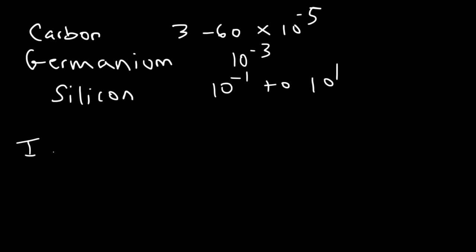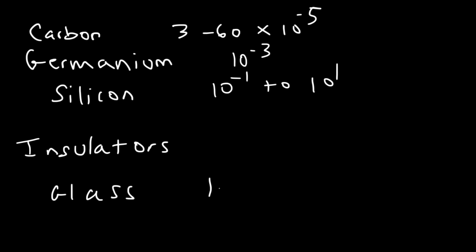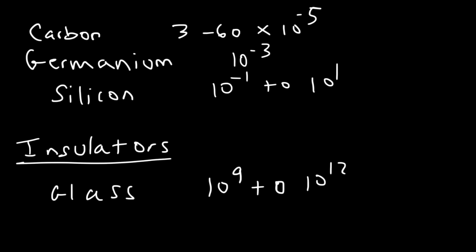Insulators, for the most part, do not conduct electricity. Glass has a resistivity that's very high — 10 to the 9 to 10 to the 12 — much higher than silicon. Insulators just don't conduct electricity, semiconductors conduct a small amount, and metals, because they have such low resistivity values, are very good conductors of electricity.